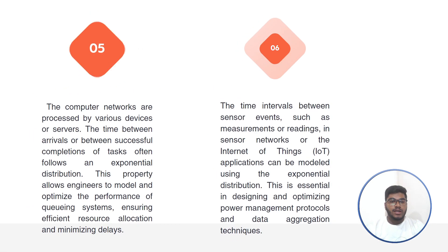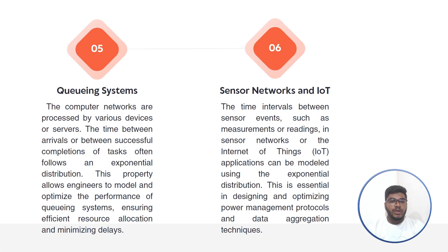The exponential distribution is also used in queuing systems. In computer networks, tasks are processed by various devices or servers, and the time between arrivals or between successful completions of tasks often follows an exponential distribution.